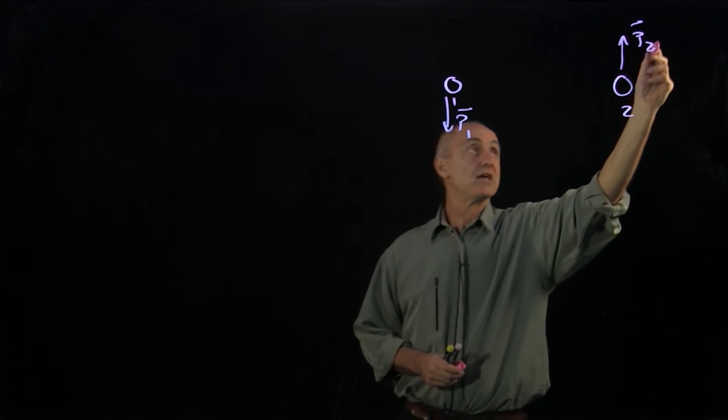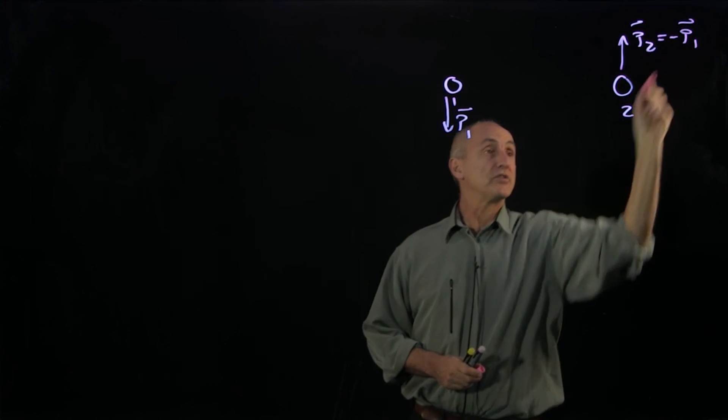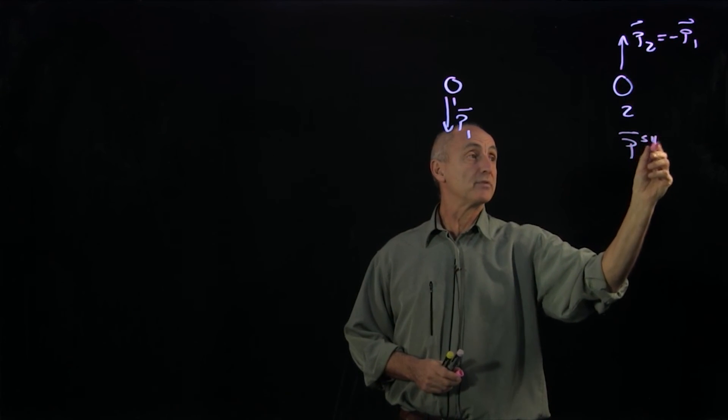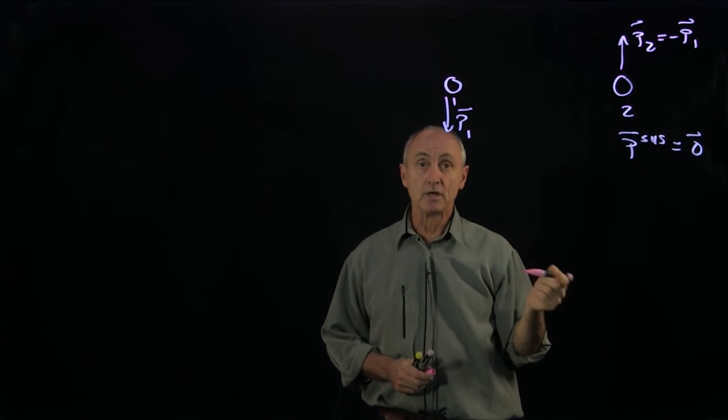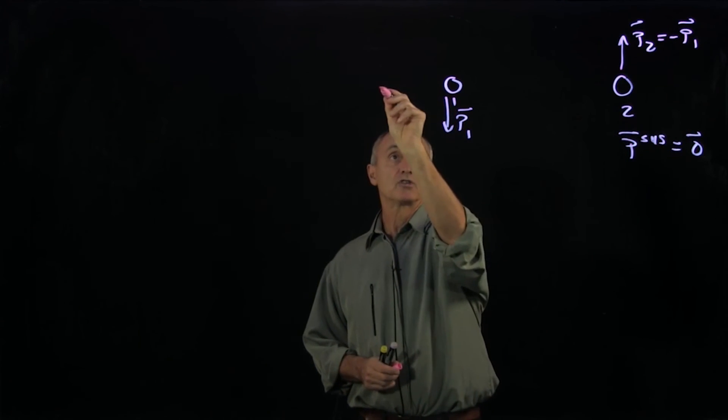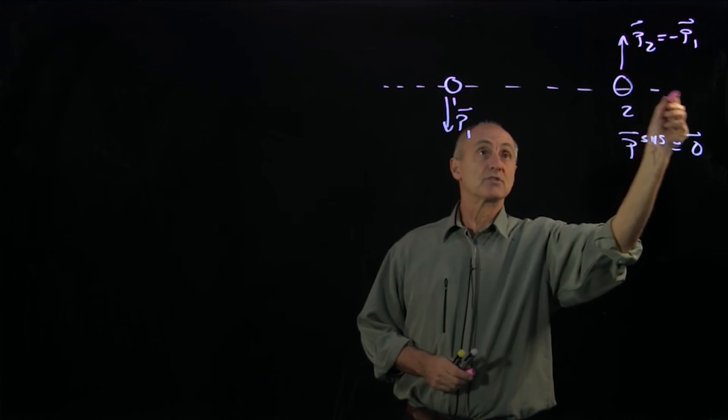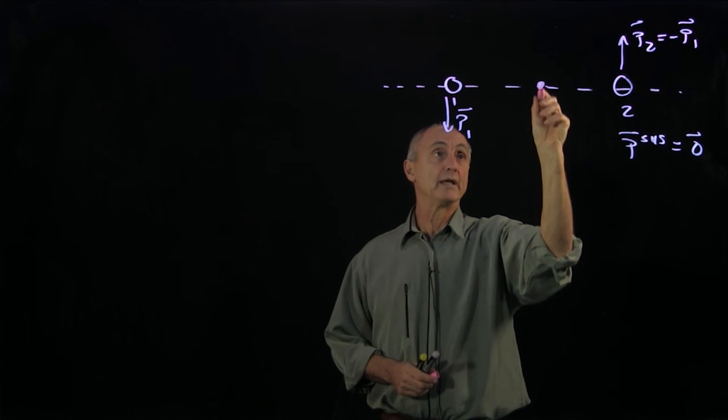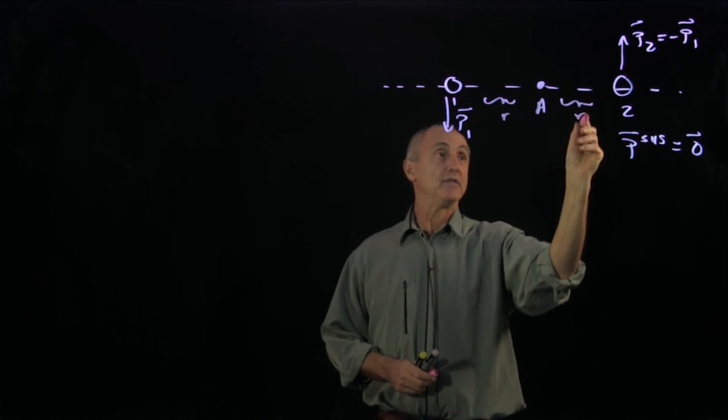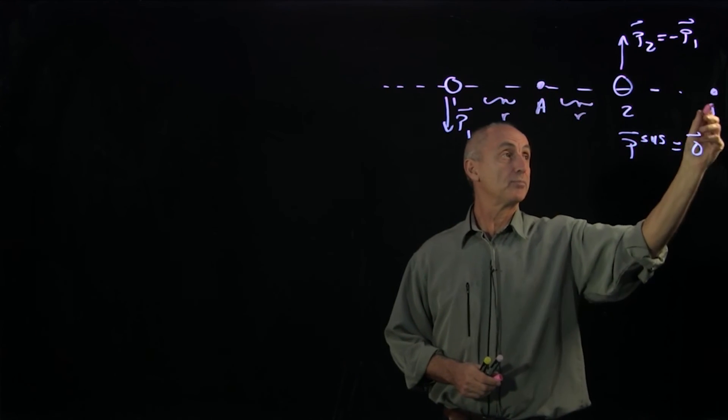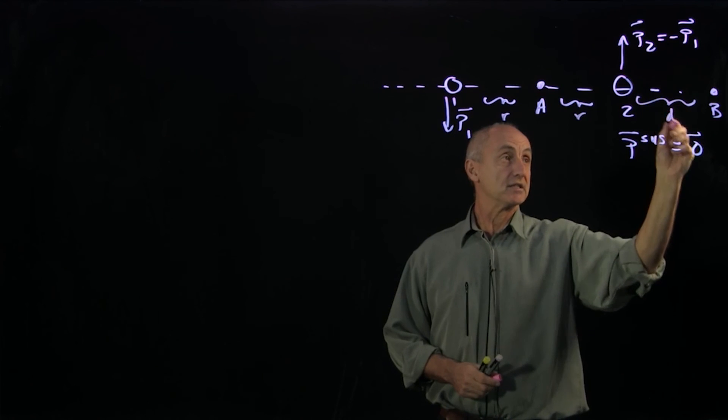Now in this case, I want to make the sum of the momentum so the momentum of the system is 0. And now I want to calculate the angular momentum about two different points. So let's just draw an axis here. Let's choose one point A, and we'll call this distance R and this distance R. And let's choose another point B, and we'll call that distance D.